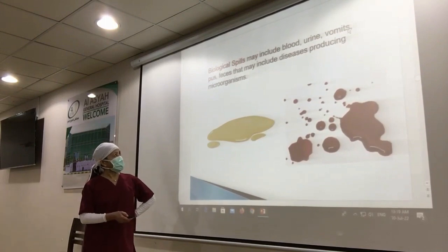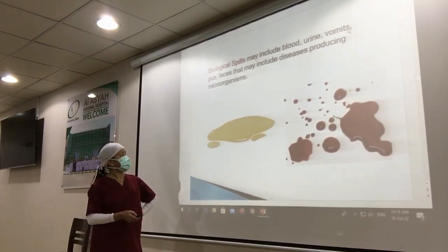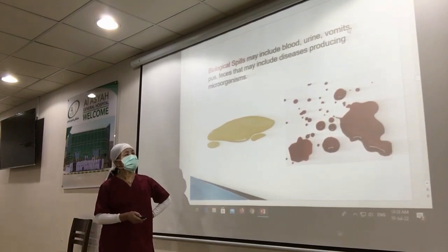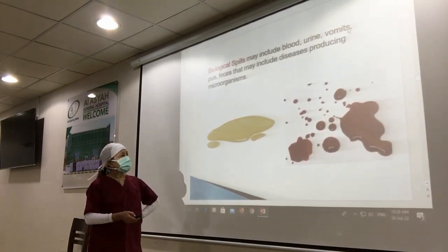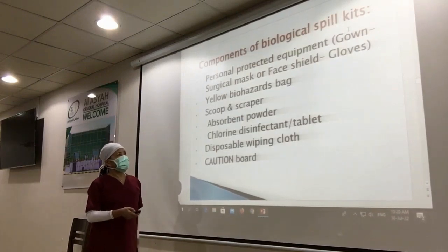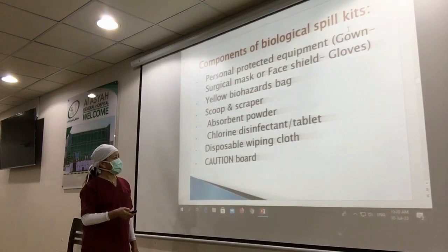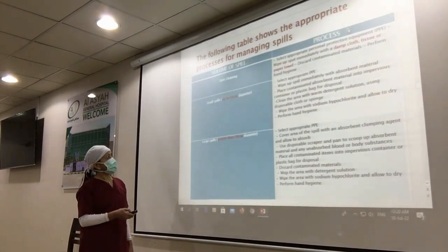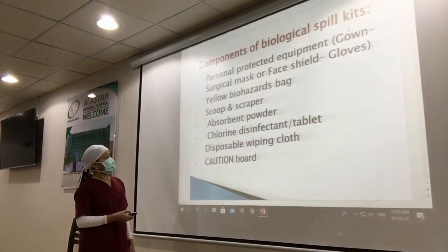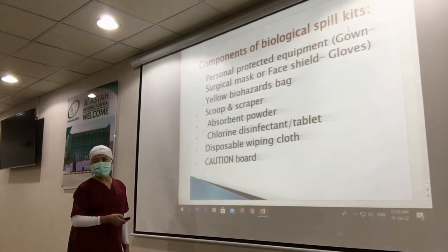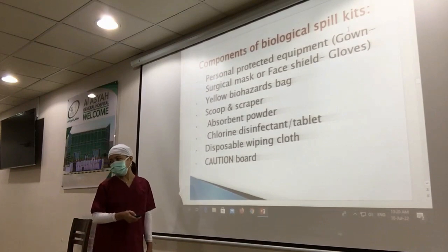Biohazard spills include blood, urine, vomit, feces — these include diseases produced by microorganisms. The components of a biohazard spill kit are: PPE including gown and gloves, yellow biohazard bag, scoop and scraper, absorbent powder, chlorine disinfectant tablet, disposable wiping cloth, and caution board. I will demonstrate each one by one.